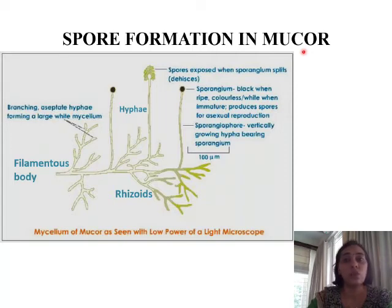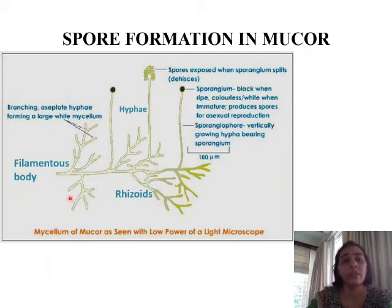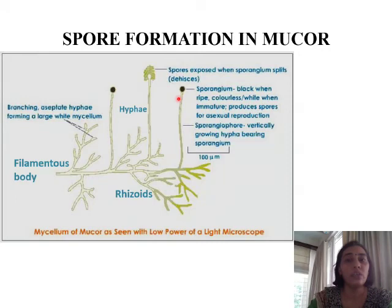When conditions are suitable, mucor starts growing on stale food items. Under a microscope, mucor has a filamentous body — you can see many filaments growing, and it also has rhizoids, which are false roots. Some filaments start growing upwards, growing erect. These erect filaments are called hyphae. The hyphae then start bearing sporangia. The sporangia are initially black in color when they are mature, and inside each sporangium there are spores.